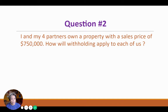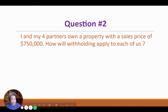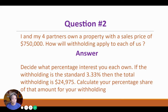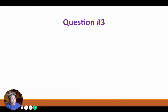Question number two: I and my four partners own a property with a sales price of $750,000. How will withholding apply to each of us? First, we need to decide how much interest you all own. Then, if the withholding is based on the standard 3.33%, you figure that the total withholding is going to be $24,975. So once you've calculated the percentage interest that you own, you multiply that to the $24,975 and you will get the amount of your withholding.